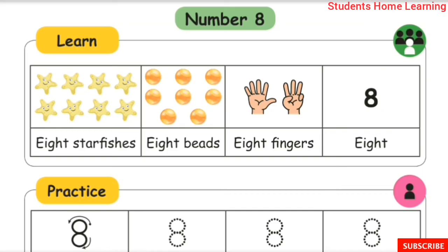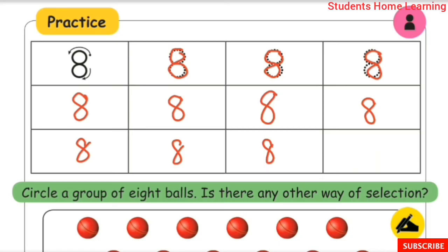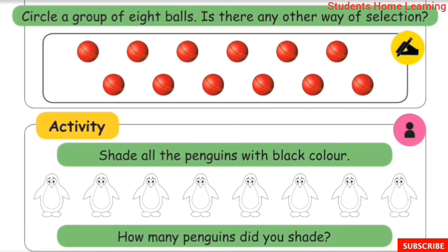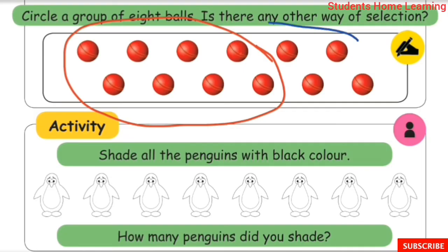Number 8 — Learn: eight starfishes, eight beads, eight fingers. Eight objects. Practice writing eight. Circle a group of eight balls. Eight balls are circled. Is there any other way to select eight? You could circle the last ball or middle balls differently.